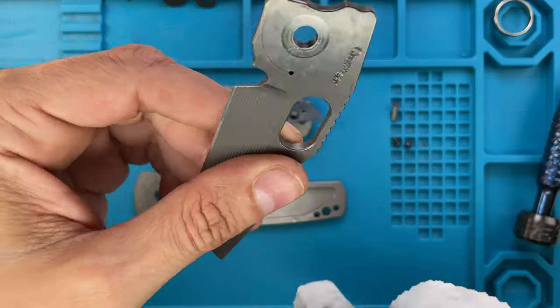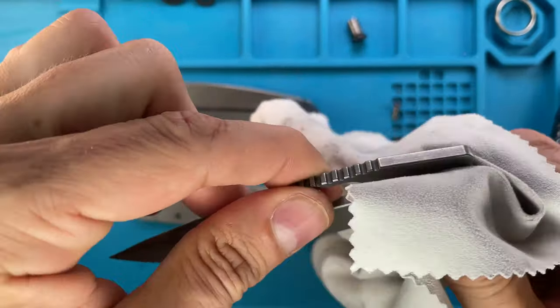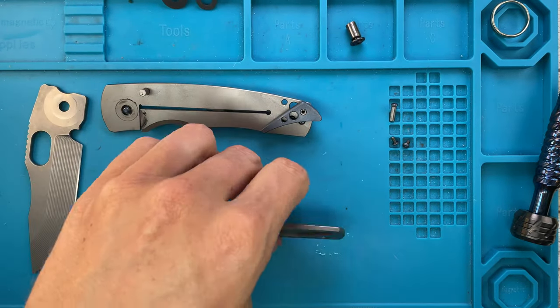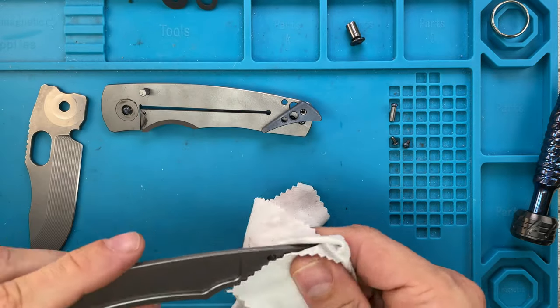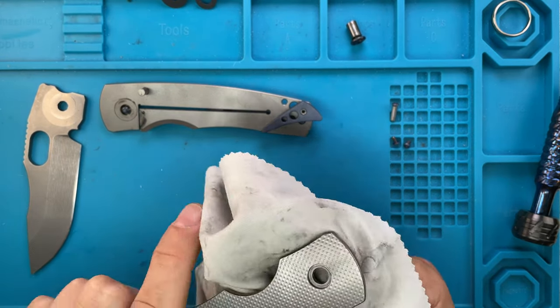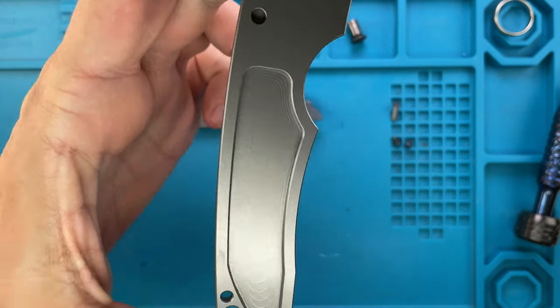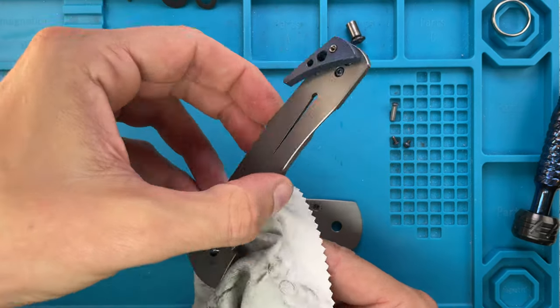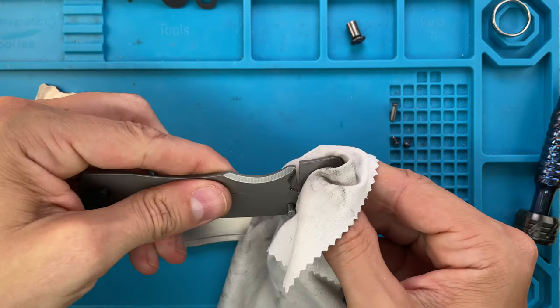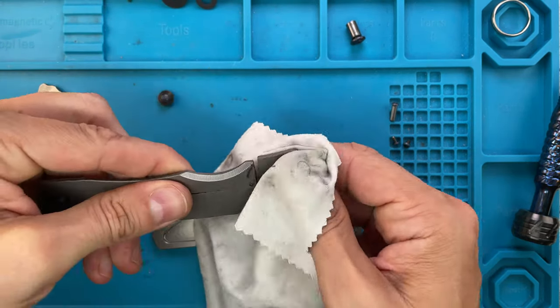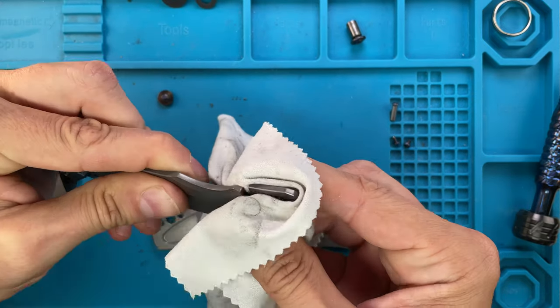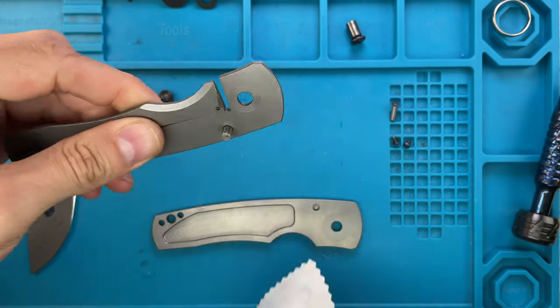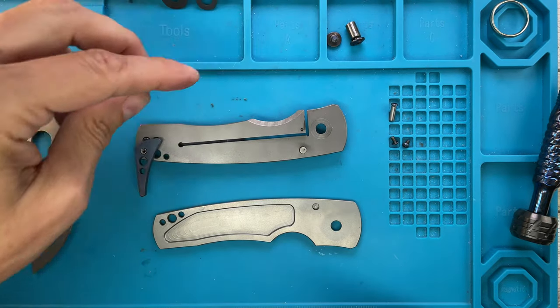So nice polished areas. He's using Cruwear, I think he's doing his heat treatment in house and that's fantastic. Let's clean also all this area here. You see there's some milling pockets on the show side only, this is your lock side.